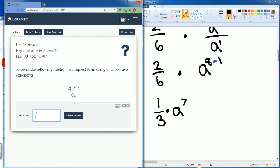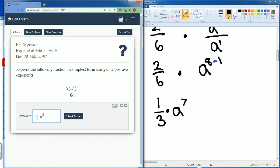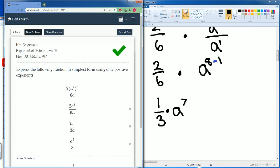Or you can just put a to the seventh power on top right here. It would be the same answer. Alright. There you go. So that is how you do the exponent rule level one.